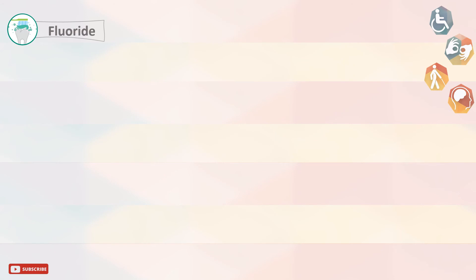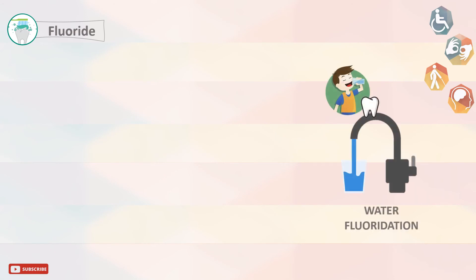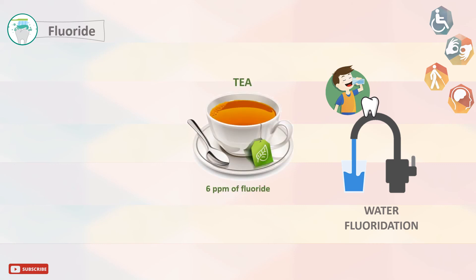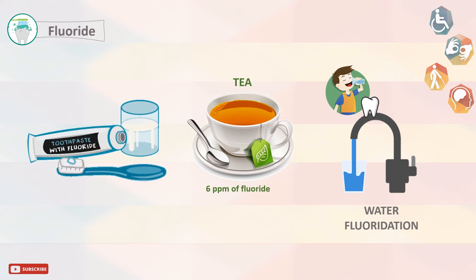Fluoride effect: water fluoridation decreased caries experience and increased the proportion of children free of caries by 5–64%. A cup of tea may contain up to 6 parts per million of fluoride, which is at an equivalent concentration to sodium fluoride or sodium monofluorophosphate containing toothpaste.